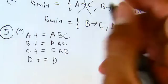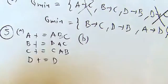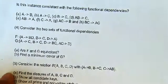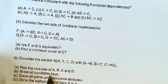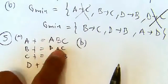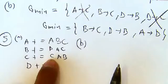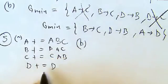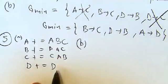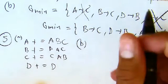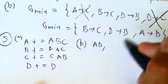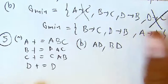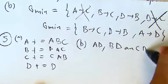For question B, we want to determine all candidate keys. Since A, B, and C each give the closure {A, B, C} but none of them can derive D, we need D in every candidate key. So the candidate keys are AD, BD, and CD.